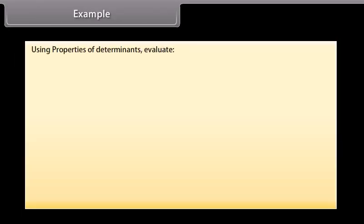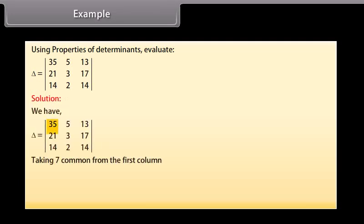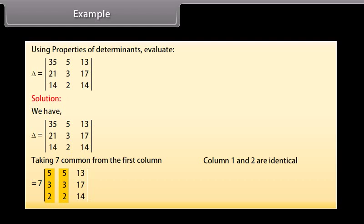Example: using properties of determinants, evaluate the determinant. Solution: by taking 7 common from the first column, column 1 and column 2 become identical, so the value of the determinant is zero. Therefore the result equals 7 times 0 equals 0.